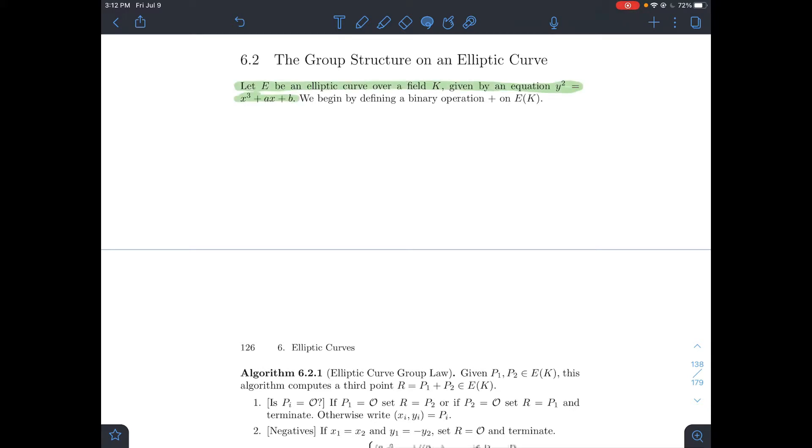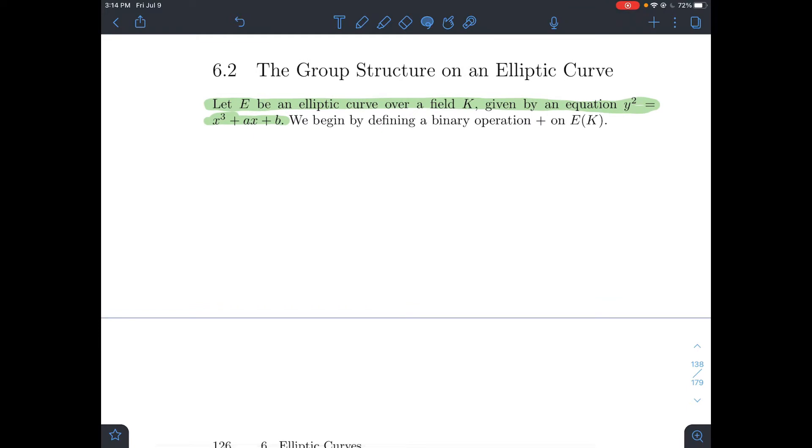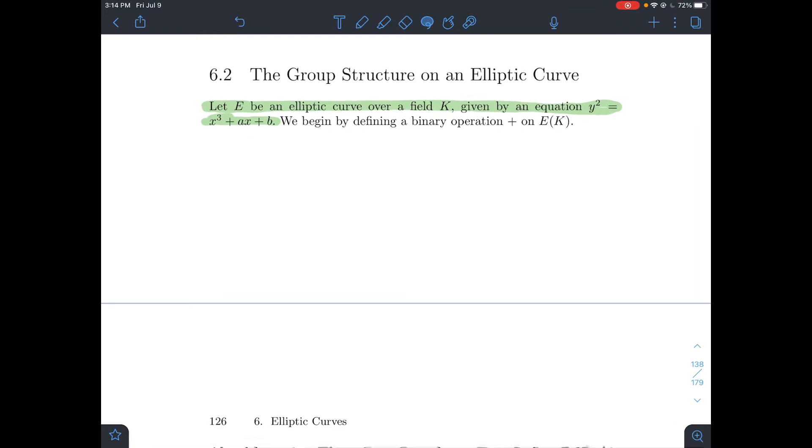So where are we? E is going to represent the curve, and we're told that it's over a field K. The curve is given by this equation y squared equals x cubed plus ax plus b. What we're going to do is try to define a binary operation called plus, so it should look like addition, on this set E(K).